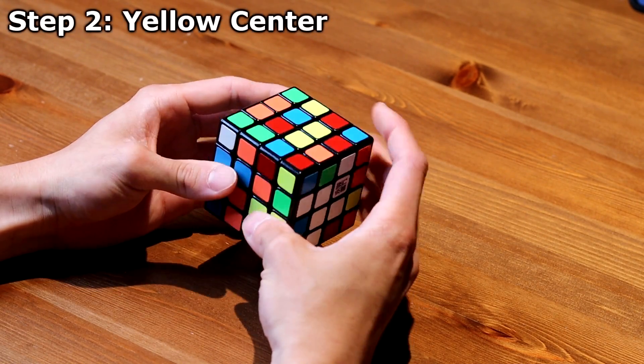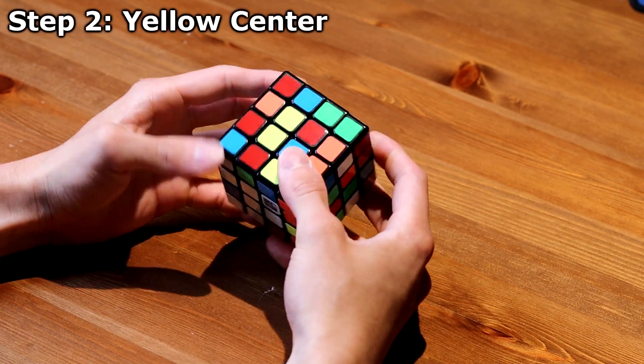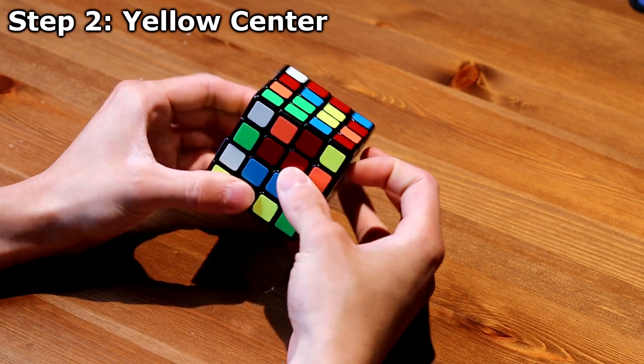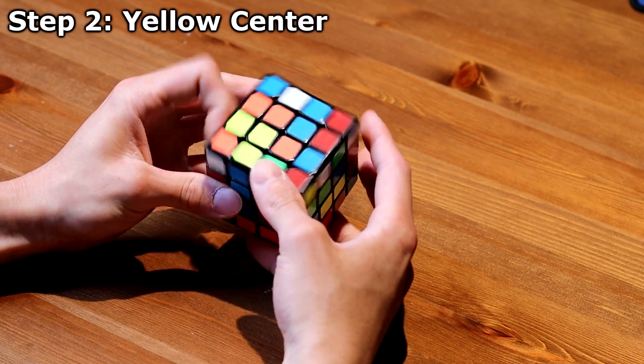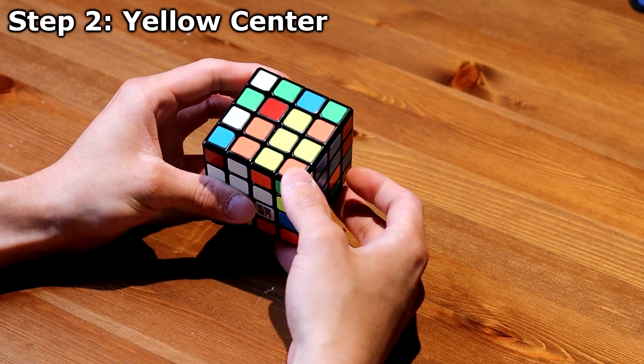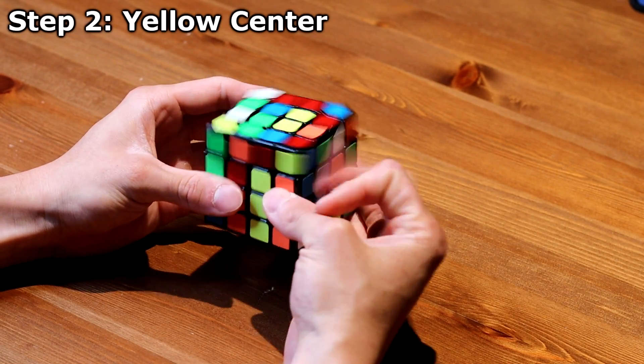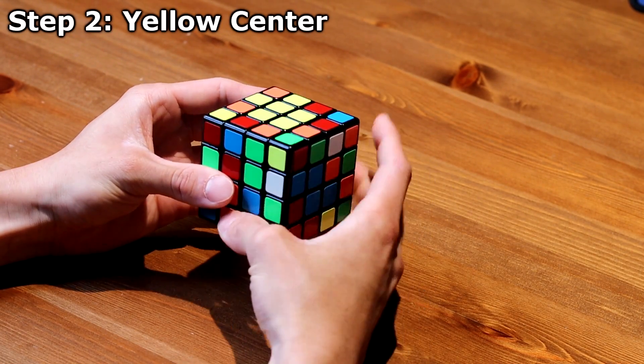I see a 2x1 block right here. I want to move it up to the top layer like that and then connect the remaining 2x1 edge to move it to the top. Line the yellow piece up and then boom, white and yellow done.